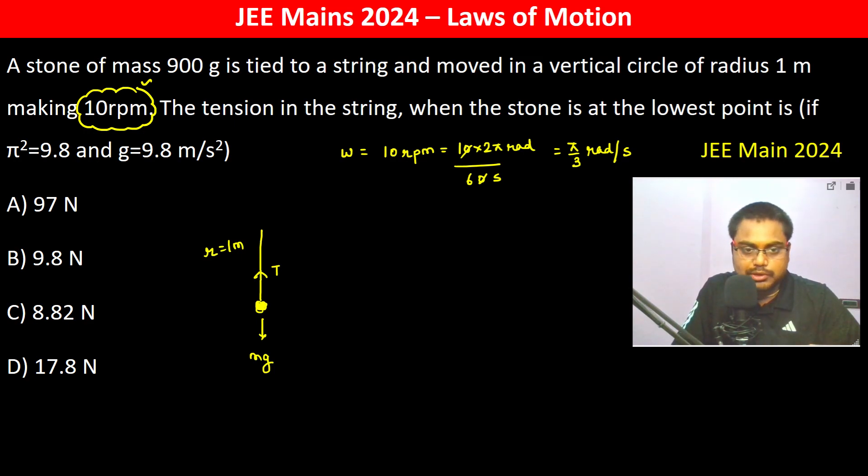T minus mg should be equal to mv² divided by R. So therefore T will be equal to mg plus mv² by R which is equal to 0.9 into 10 plus mass again 0.9 into v².